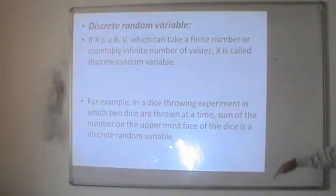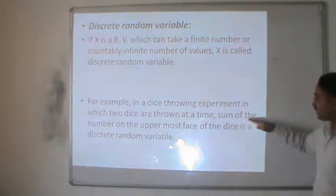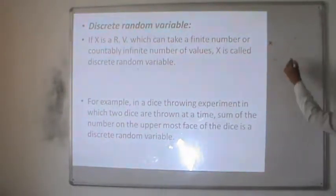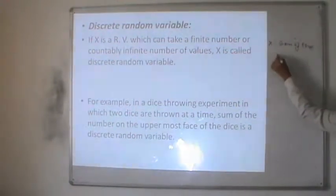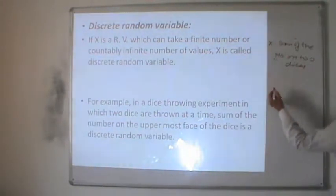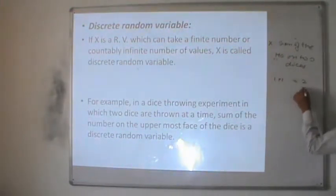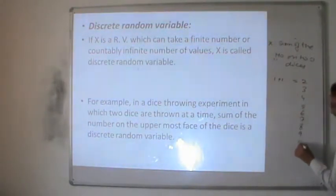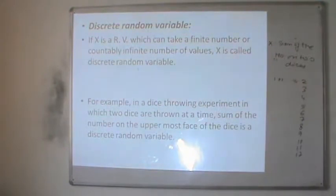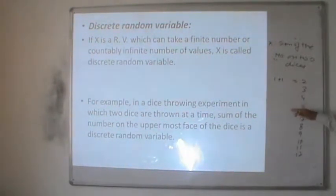For example, in a dice throwing experiment in which two dice are thrown at a time, the sum of the numbers on the uppermost face of the dice is a discrete random variable. In this case, x denotes the sum of the numbers on two dice. The minimum sum is 1 plus 1 equals 2, and the values go 2, 3, 4, 5, 6, 7, 8, 9, 10, 11, and 12. So the values are discrete and countable — 2, 3, 4, 5, 6, 7 — and such a random variable is known as a discrete random variable. This is an example of a finite number of values, so the given random variable is known as a discrete random variable.